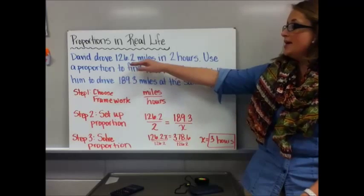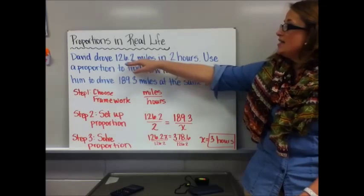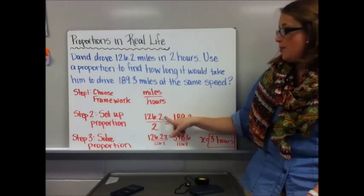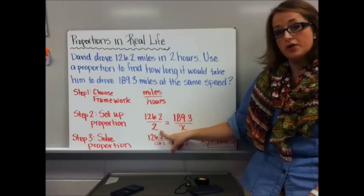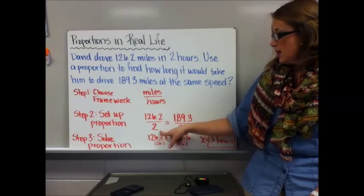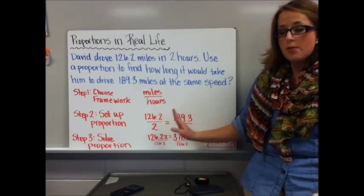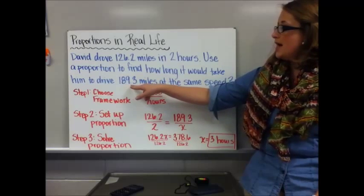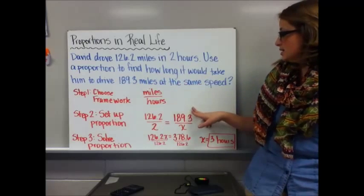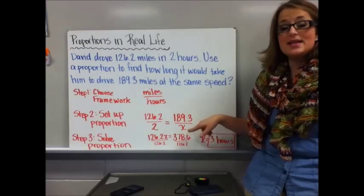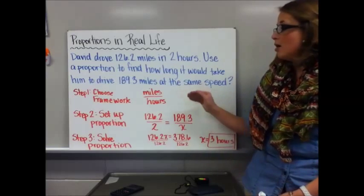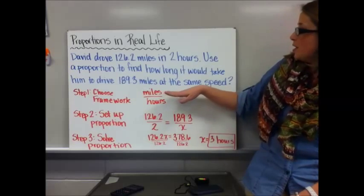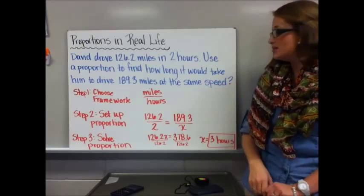My first ratio is the given ratio: David drove 126.2 miles in two hours, so I put 126.2 over 2. That is proportional to 189.3 miles over x, where x is how long it will take. These two are equivalent because they're traveling at the same speed.